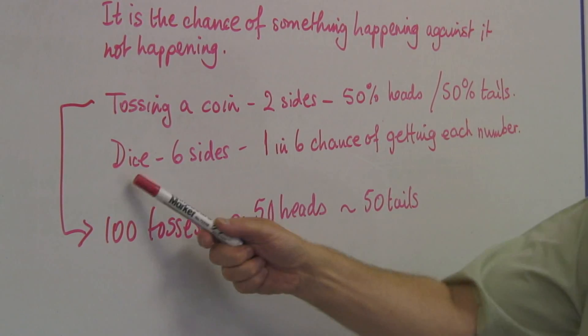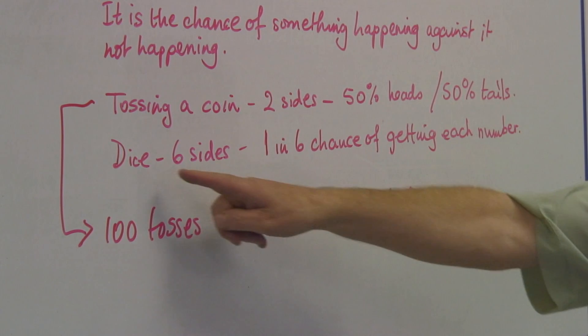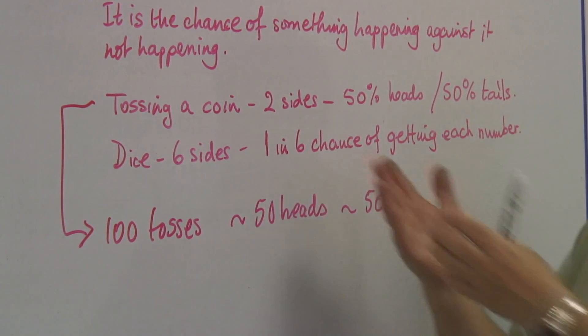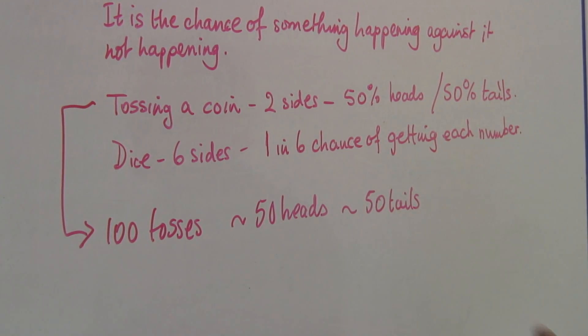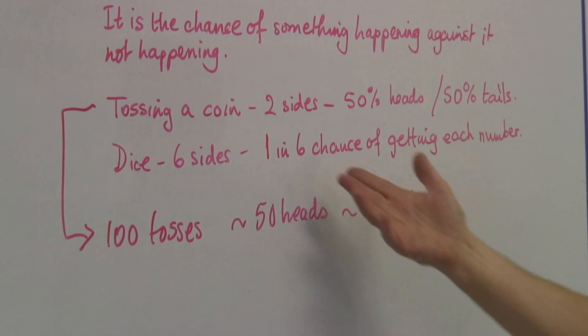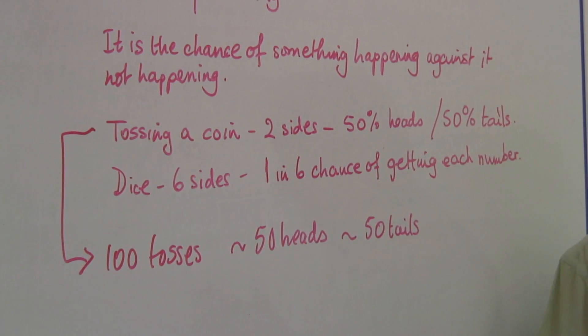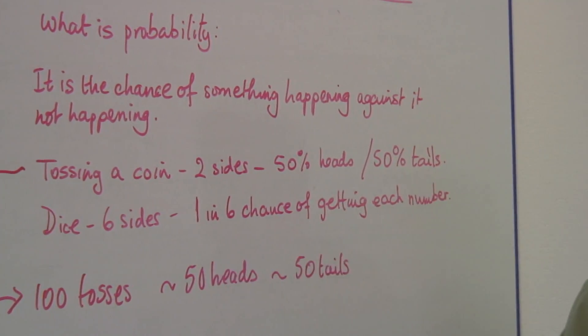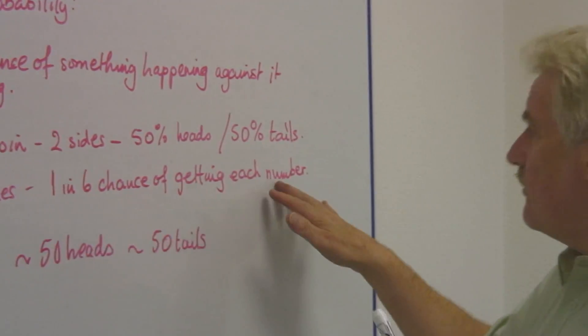Now with a die, I toss it. It's got six sides. And if it's got six sides, it's got six ways of landing. And therefore, I have a one in six chance of getting each number.